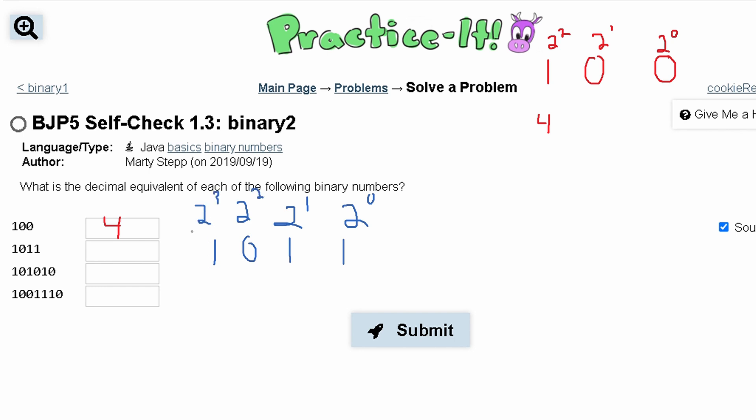After we have this we multiply the value on top by the value below it. So we have 2 to the 3rd here which gives us 8. We add this to the next value which is 2 squared times 0 which is 0. Then we add this to 2 to the 1st power times 1 which is 2. And then we have 2 to the 0th power, and anything to the 0th power is just 1, this is being multiplied by 1, so we get plus 1 here. 8 plus 2 plus 1 gives us the value 11.